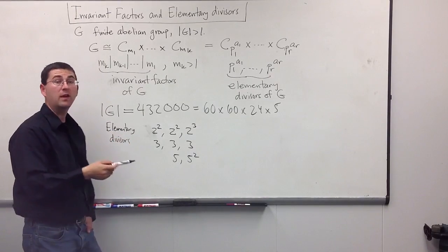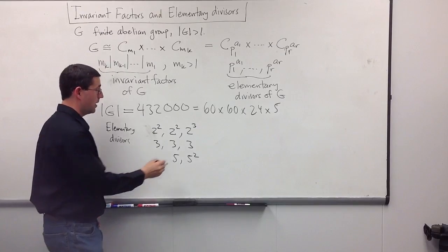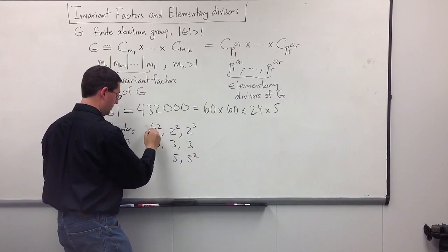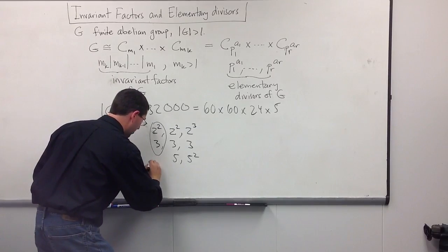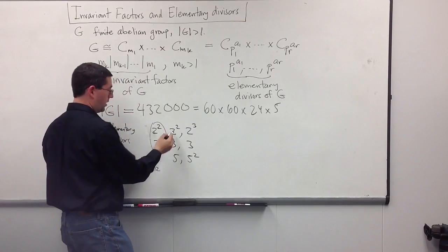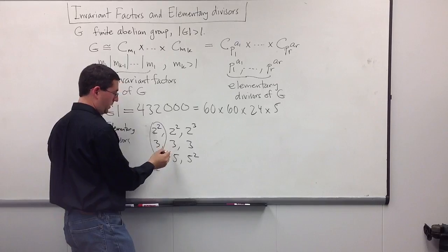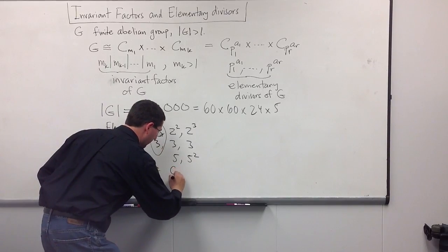Then, I can compute the invariant factors by multiplying vertically. So, I'll get, let's see, 2 times 2 is 4, times 3 is 12. So, I'll get a C12. Let's see, 4 times 3 is 12, times 5 is 60. So, I'll get a C60.